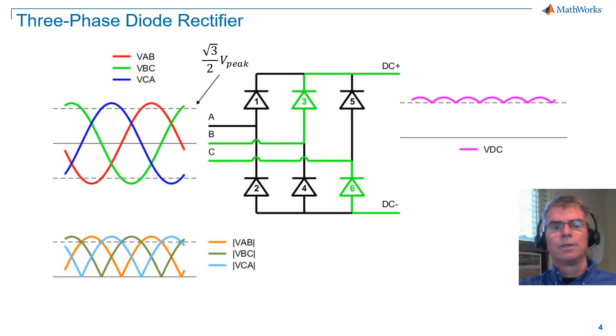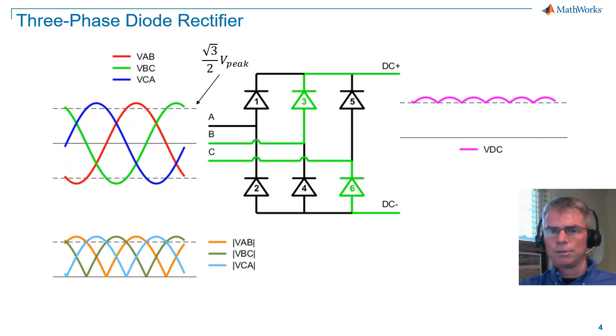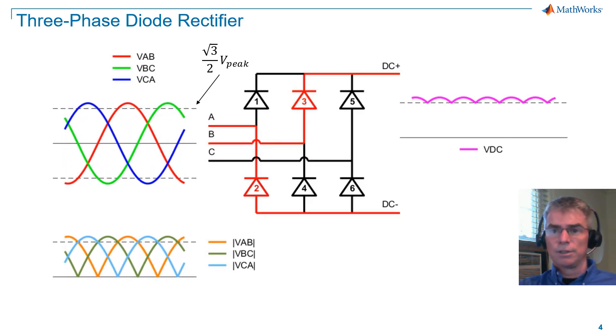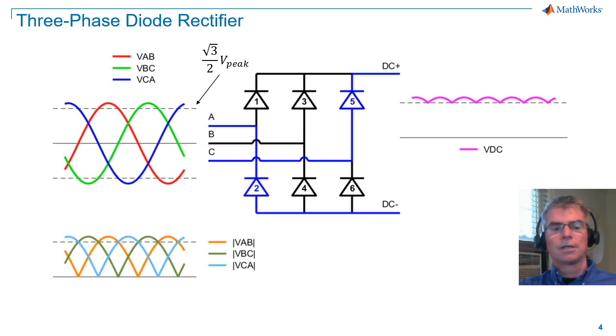Note that at square root three over two threshold, a given line voltage is greater in magnitude than the other two line voltages. Hence, forward bias occurs, and the related diodes will conduct.